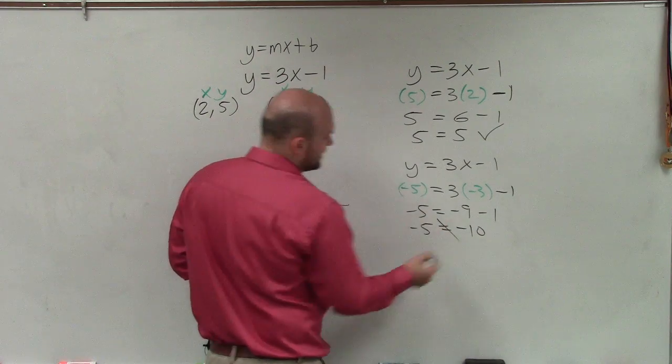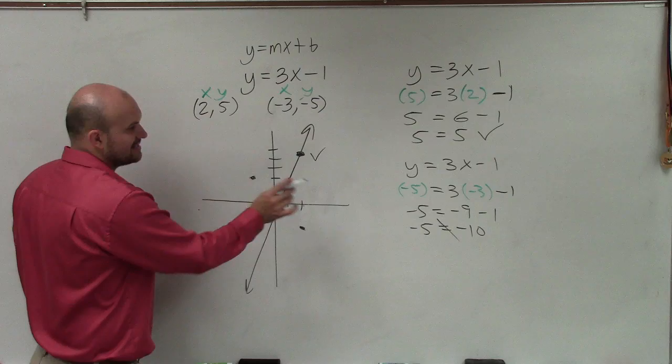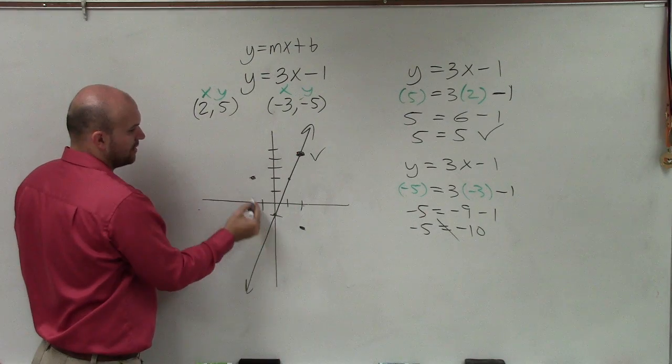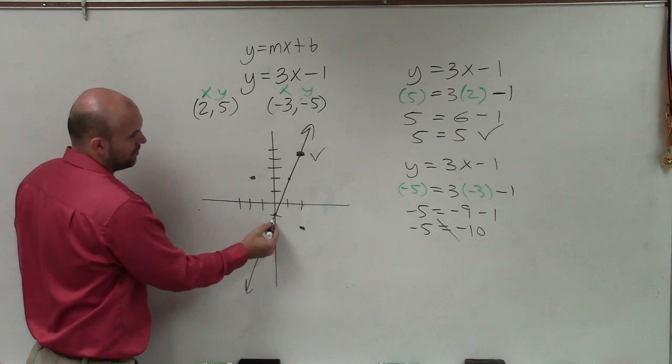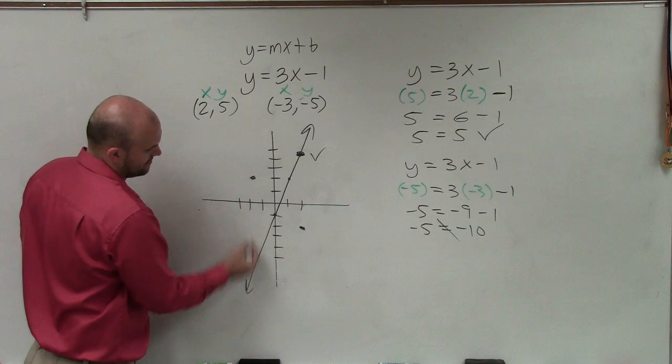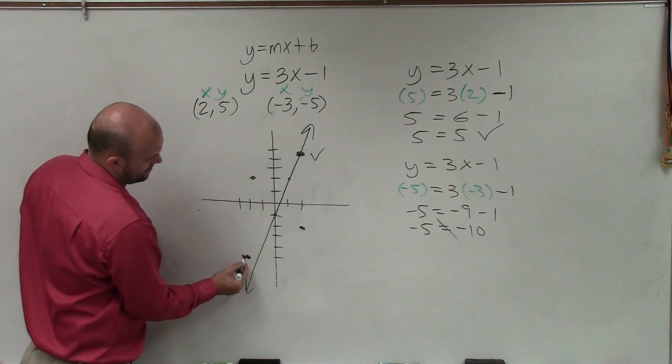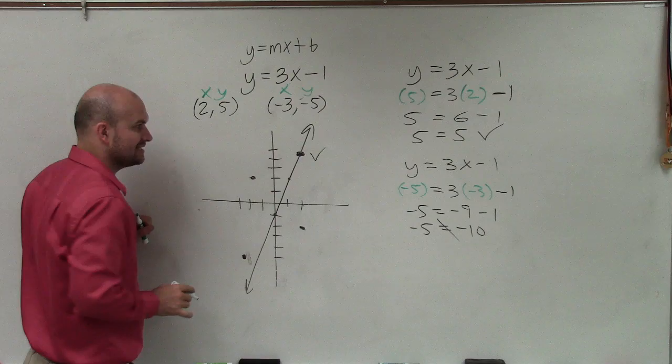Well, negative 5 is never going to equal negative 10. So that is false. That means the point negative 3, 5, 1, 2, 3, down 5, 1, 2, 3, 4, 5, so like right there, is not on the line.